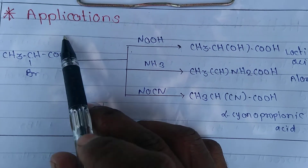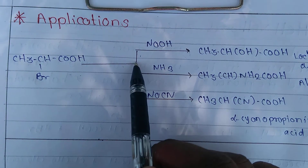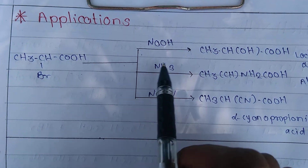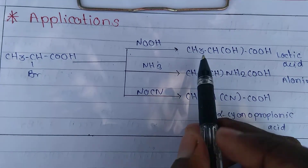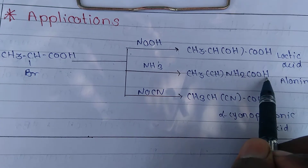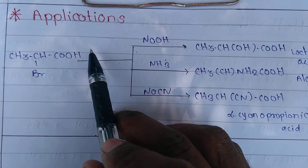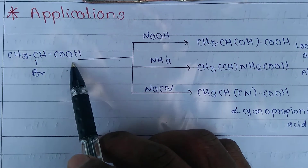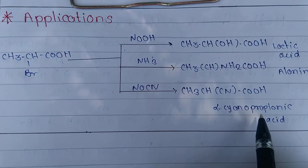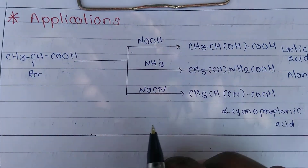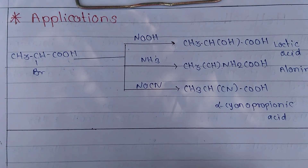The alpha-bromo acid reacts with NaOH to give lactic acid, which is biochemically important. It also reacts with ammonia to give alanine, which is an alpha-amino acid, also of biological importance. Further, the alpha-halogenated acid reacts with NaCN to give alpha-cyanopropionic acid. These are the applications of the Hell-Volhard-Zelinski reaction.